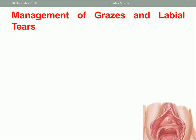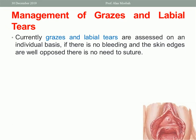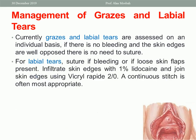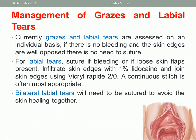Management of grazes and labial tears: currently assessed on an individual basis. If there is no bleeding and the skin edges are well opposed, there is no need to suture. For labial tears, suture if there is bleeding or loose skin flaps present — infiltrate skin edges with 1% lidocaine and join the skin edges using Vicryl 2-0; a continuous stitch is often most appropriate. Bilateral labial tears should be sutured to avoid the skin healing together.